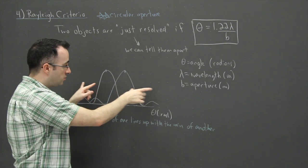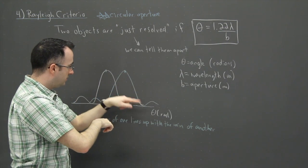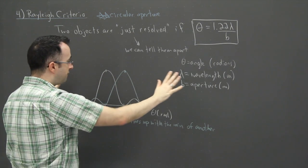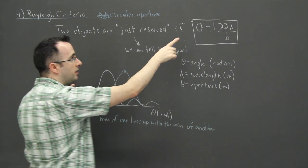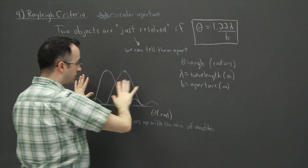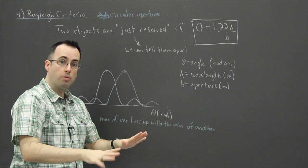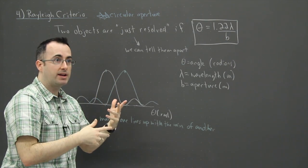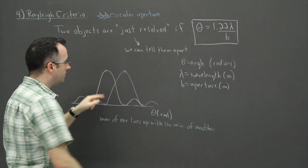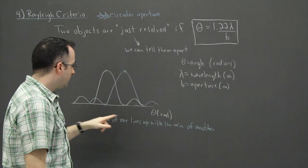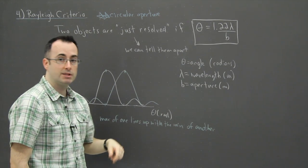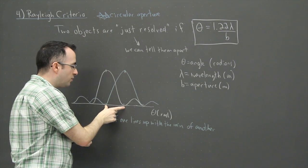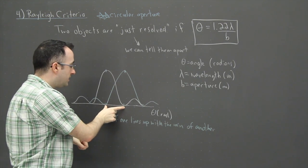So this is what we mean by this. So the idea is that these two things can be a certain, imagine this white curve and this green one, they can actually be different distances apart. So if they're further than this angle of 1.22 lambda over b, if they're farther away, we can totally tell them apart, no problem. What we say, there has to be a criteria where we decide where can we not tell them apart. And this is the criteria right here. That's the rule, is that we can just tell them apart if this happens, if the angle between them is 1.22 lambda over b. That means we can tell them apart.